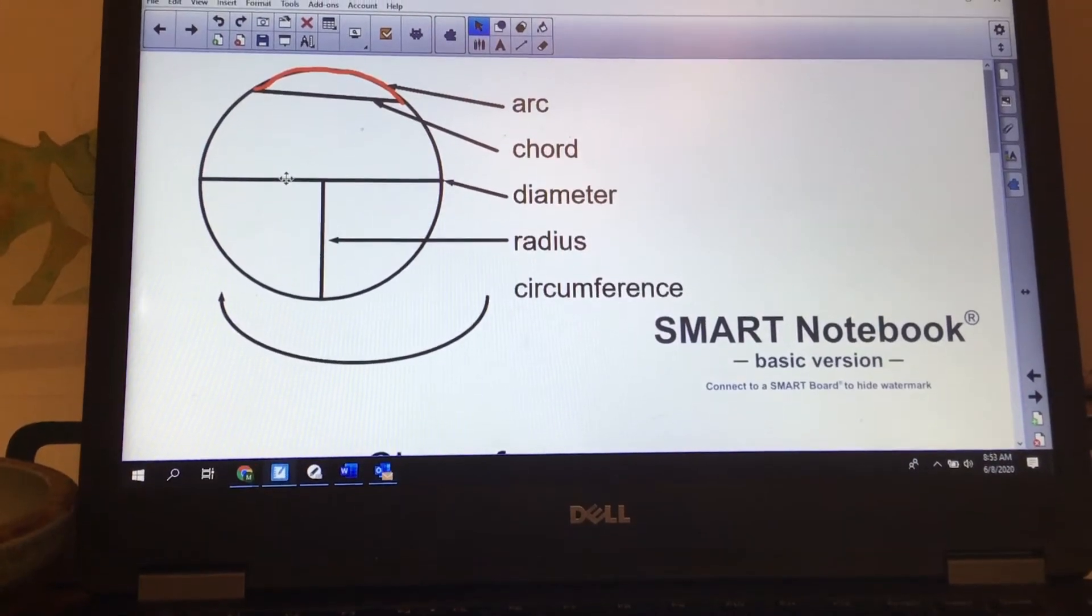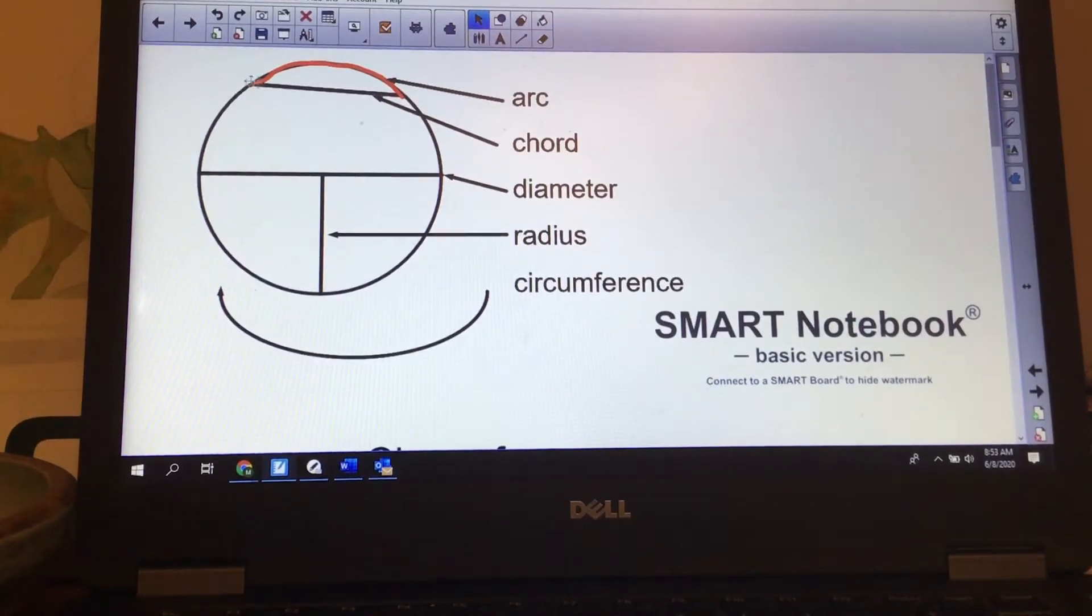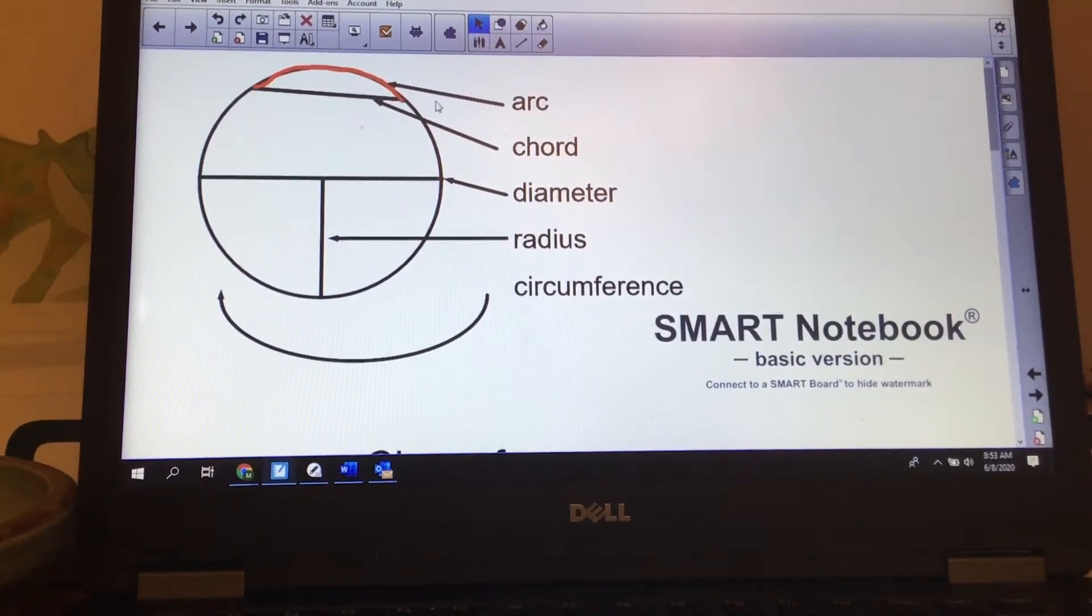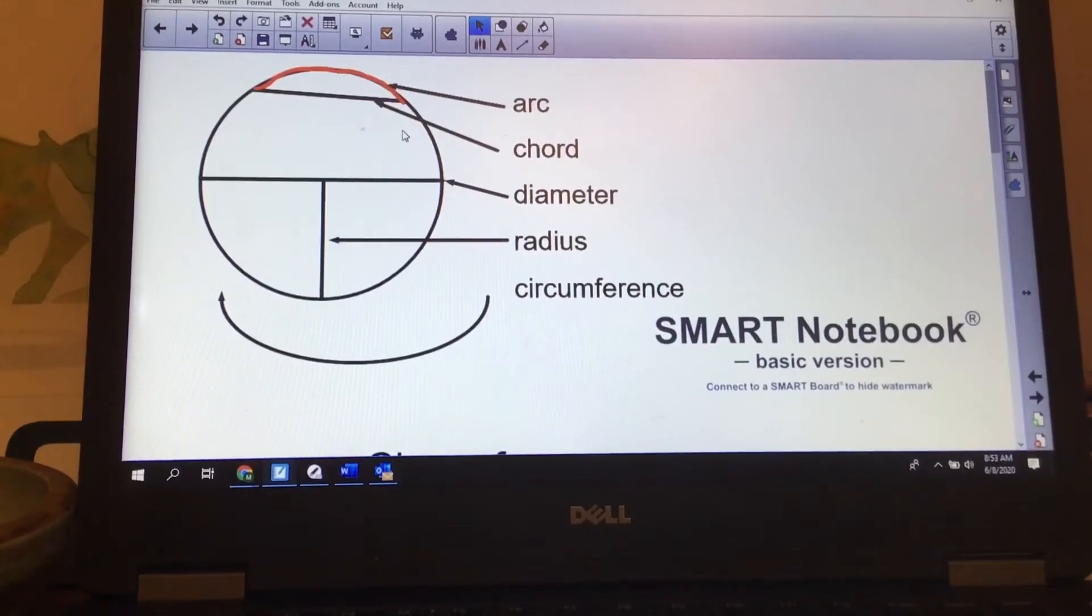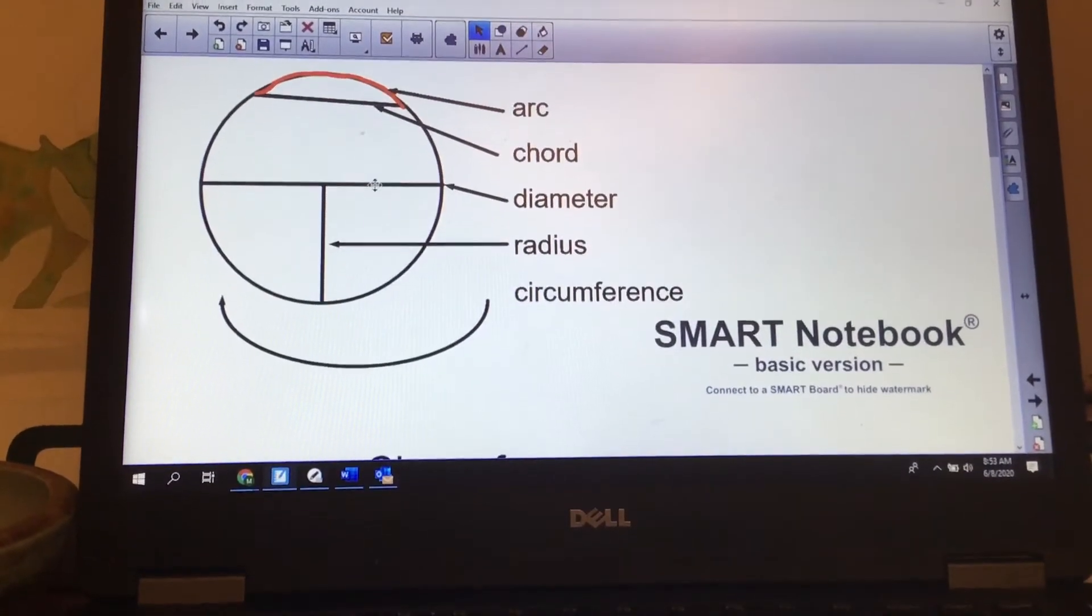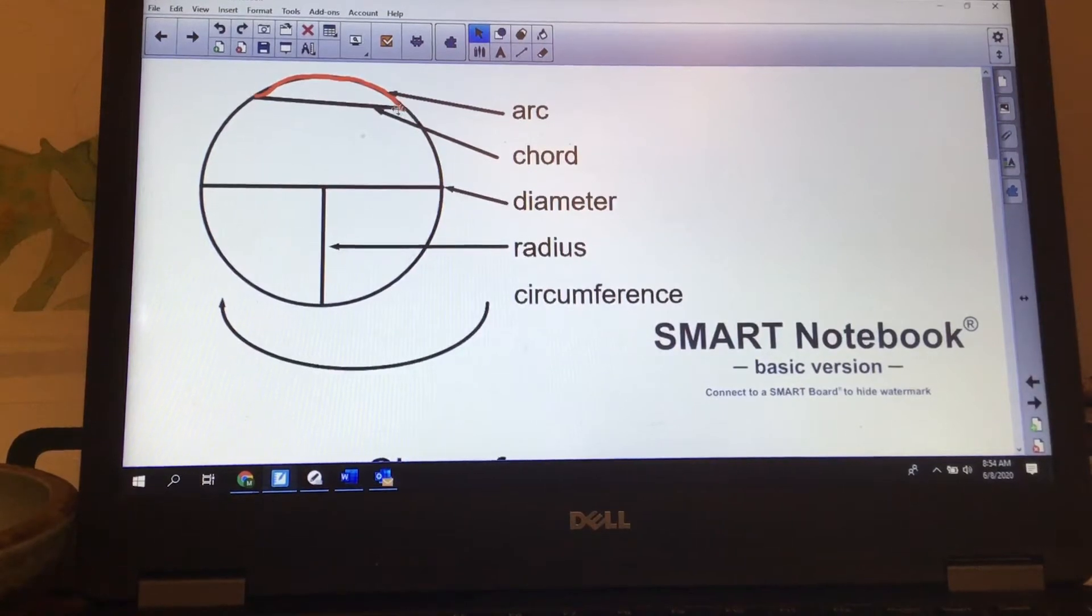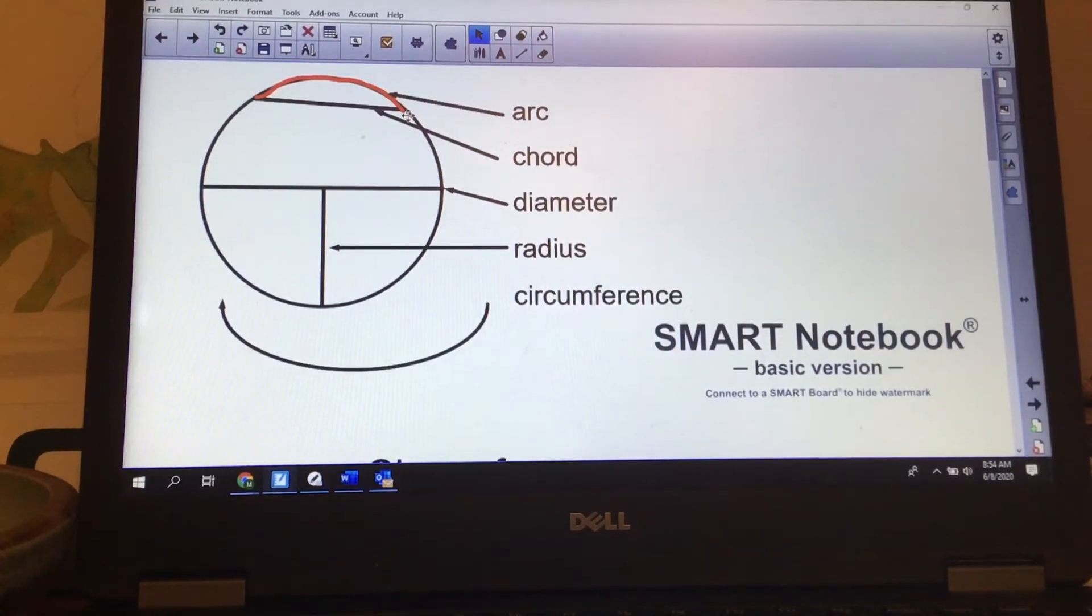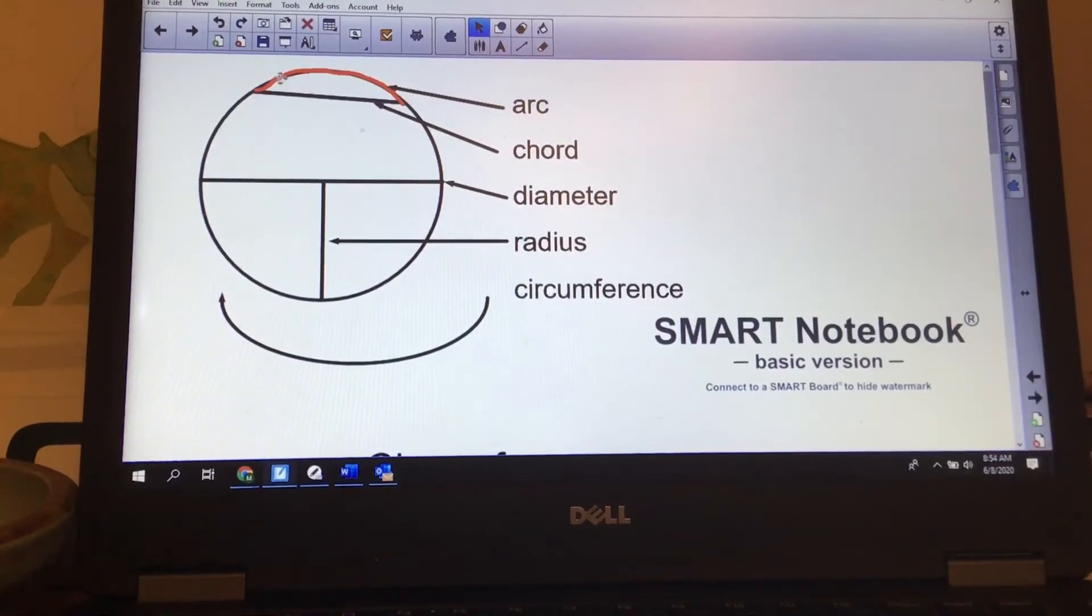A chord is a line that touches a circle in two places, so it's basically a line from one edge of a circle to another. The diameter is actually a chord, but it's a special kind. Other chords you will have to calculate in high school with formulas. An arc is the distance from one point of the chord to the other.